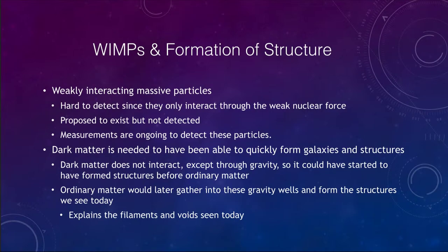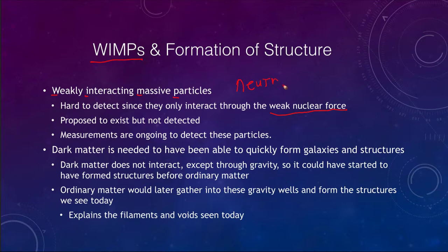How does this relate to structure formation? First, we look at WIMPs — weakly interacting massive particles — which are hard to detect because they only interact through the weak nuclear force. Unlike things that interact through gravity or the electromagnetic force, these are much harder to find. An example would be neutrinos, which are a weakly interacting massive particle but of very low mass. Many WIMPs have been proposed to exist but have not yet been detected.